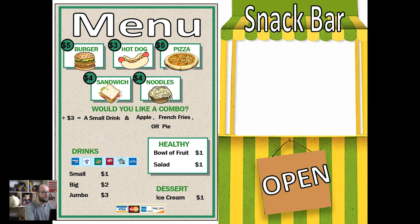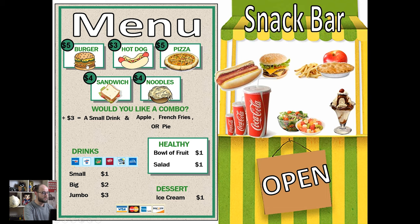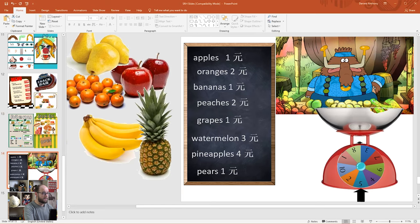Slide thirteen is another version of slide twelve — use it in a similar way to teach children how to order food or to role play working at a snack bar. 'May I take your order please?' 'Yes, I'll have a hamburger.' 'Would you like a combo?' 'Yes, I'd like a small drink and an apple pie.' 'That'll be eight dollars please, thank you very much.'